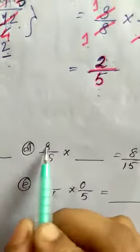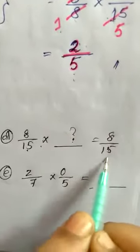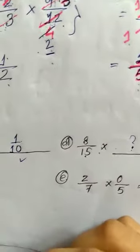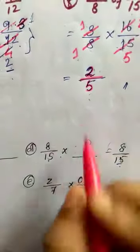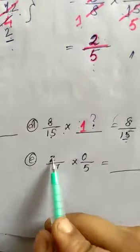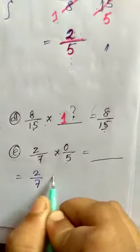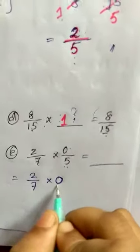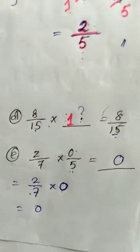Next blank: 8/15 × ___ = 8/15. Since any number multiplied by 1 gives the same result, the missing number must be 1. For the last question: 2/7 × 0/5. Since the numerator is 0, we have 0 multiplied by any number which gives 0. So the answer is 0.